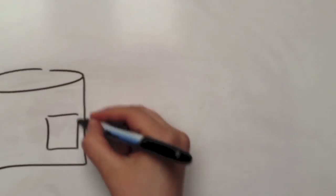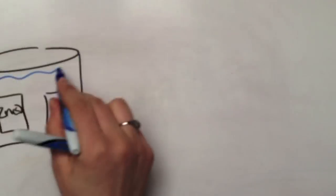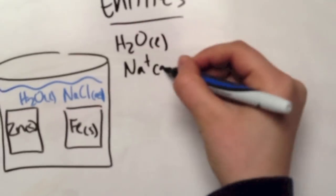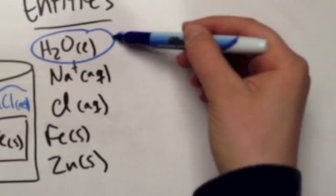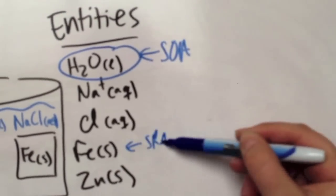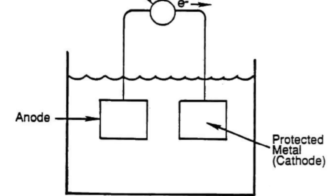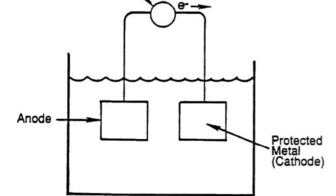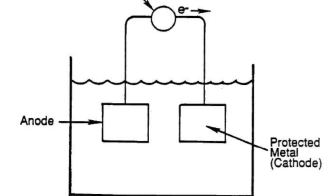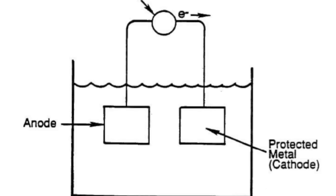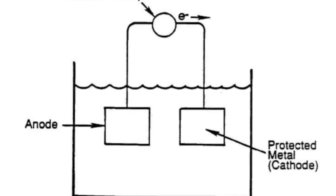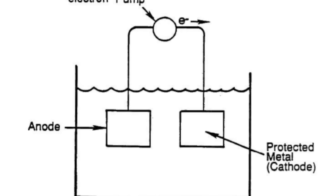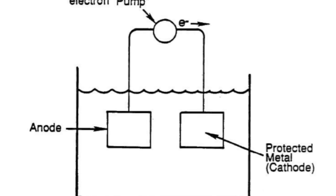Sacrificial anodes are anodes that are more reactive, thus reacting instead of another less reactive metal. In this case, zinc is reacting and rusting, thus preserving the iron. An impressed current is a cathodic protection that is applied by coupling the metal to be protected to the negative pole of a battery source, while the positive pole is coupled to an extra anode.